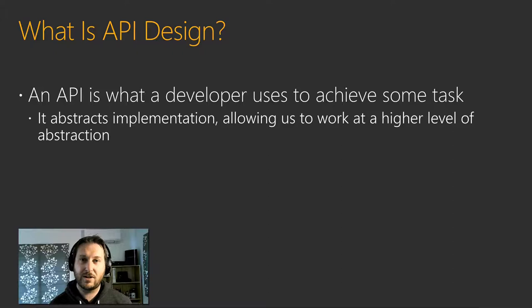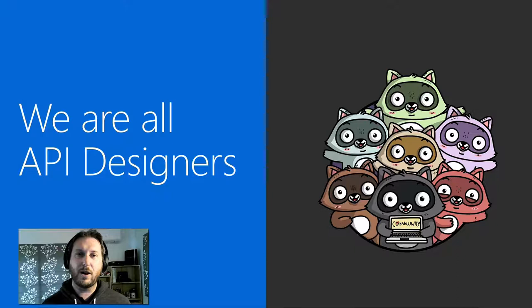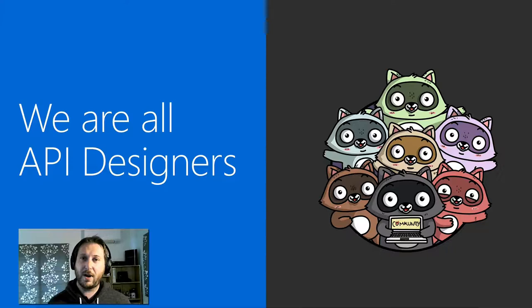An API is what a developer uses to achieve some task. It abstracts a whole bunch of implementation that the developer doesn't need to know about, so that they can work at a high level of abstraction. It's really important to note that we're all API designers — it doesn't matter if we're writing code for our own hobby projects, open source projects, for commercial use inside our employers' projects, or for massive projects like the JDK or the Azure SDK for Java. We're all designing API by writing public classes with public methods.